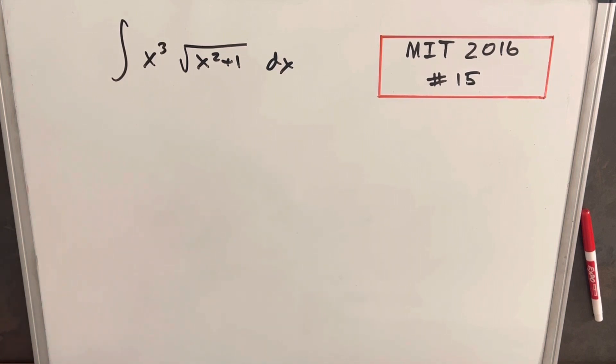Hey, another problem here from MIT Integration B 2016. This is problem 15. We got the integral of x cubed times square root of x squared plus 1 dx.